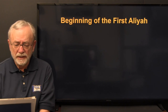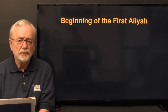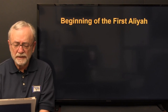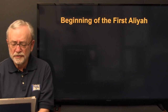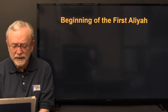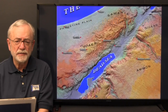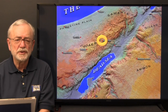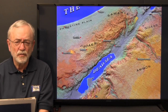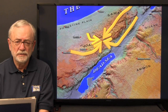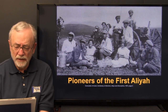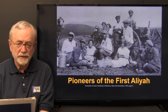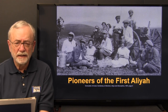Now we come to the beginnings of the First Aliyah. Between 1882 and 1903, 25,000 Jewish people entered Palestine — the largest single immigration since the Spanish expulsion decree of 1492. This was called the First Aliyah, the first immigration wave. The term Aliyah comes from a Hebrew word meaning 'to go up,' because Jerusalem is located in the Judean hills and no matter from which direction — north, south, east, or west — you are going up to Jerusalem. Here are pictures of some of the courageous pioneers of the First Aliyah.